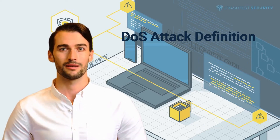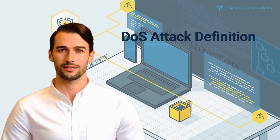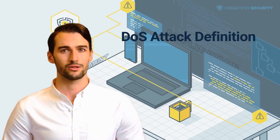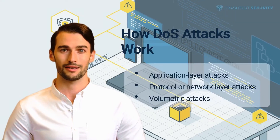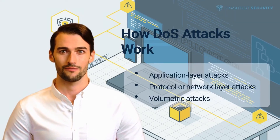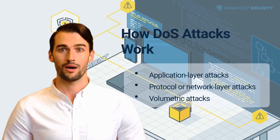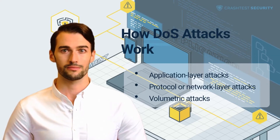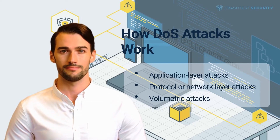Unlike a distributed denial-of-service attack, also known as a DDoS attack, a DoS attack is executed via a single machine. The mechanism of a DDoS attack is pretty straightforward — it seeks to overwhelm the capacity of the attack target via traffic. The specific way of executing such an attack will depend on the vulnerability of the targeted system.